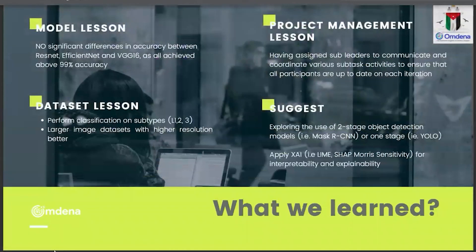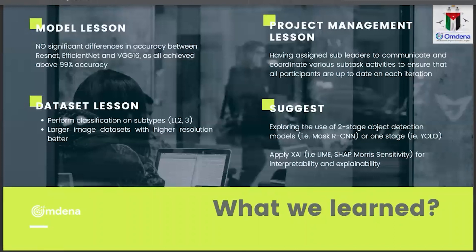The most important part of our project is what we've learned. First, model lessons: there were no significant differences in accuracy between ResNet, EfficientNet, and VGG-16, as all achieved above 99% accuracy and F1 scores. Regarding project management, we assigned sub-leaders to all tasks and our leaders were communicating well, which was very important to the success of the project. Regarding the dataset, larger image datasets with higher resolution are very important for model training to achieve good accuracy and extendability. We were also looking at classification of subtypes L1, L2, and L3 — the FAB classification — which we hope to work on in the future.